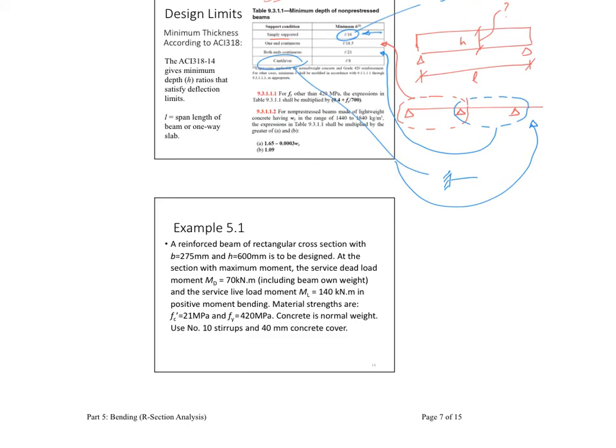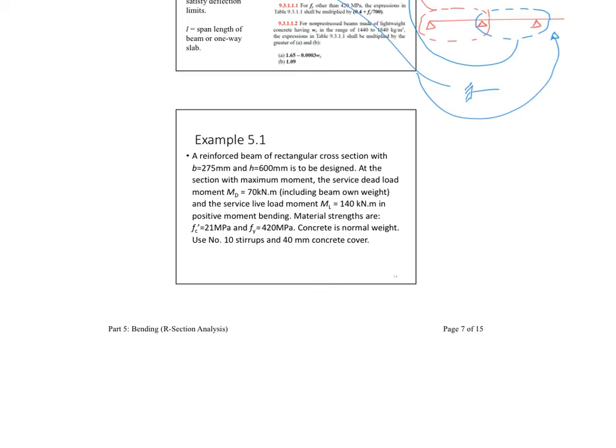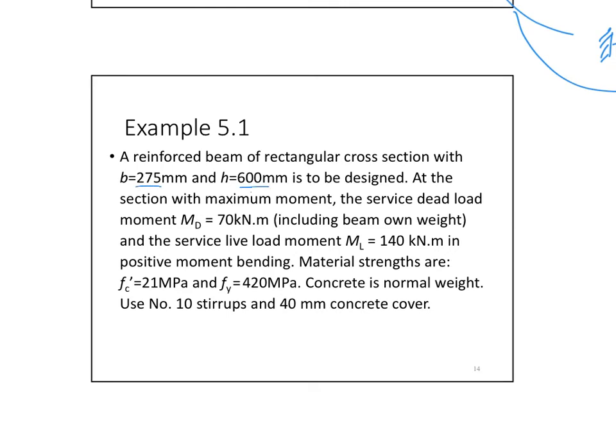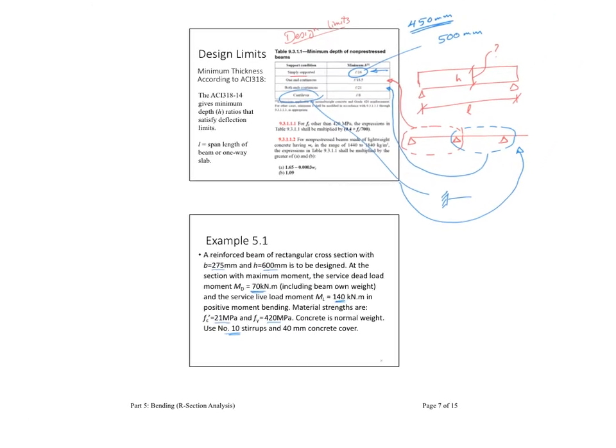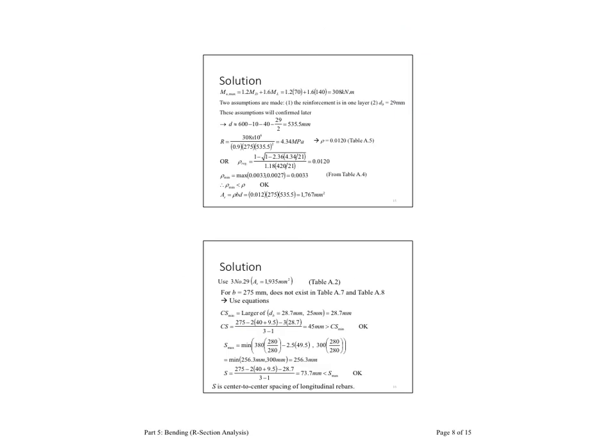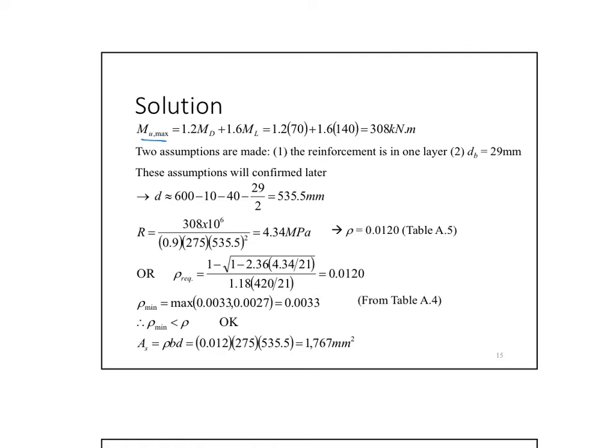So it is preferred to just keep it either with those numbers or larger than those numbers. Let's go over an example. It says the reinforced beam of rectangular cross section with B equals 275, H equals 600 millimeters is to be designed at the section of the maximum moment service dead load. So M dead equals 70, including beams on weight and a service life load. M life equals 140, positive moment bending. Material strength is 21 and 420. And it is a concrete is normal weight. Use number 10 for stirrups. So it's 275 times 600. Go over the design.